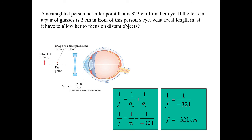If the person had contacts, it would be the same thing but without the correction. That's how we find the focal length for someone who is nearsighted. You have some questions to do, and next we'll look at farsightedness. Good luck.